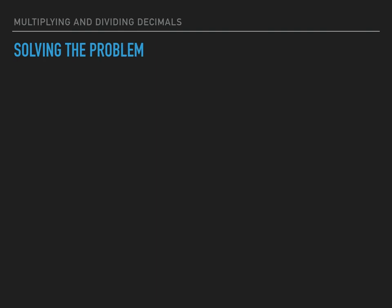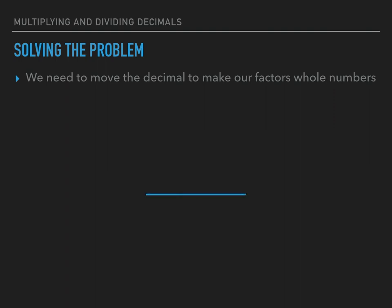Let's talk about solving a problem now. The very first thing we need to do is move the decimal to make our factors whole numbers. We cannot multiply with decimals in our problem. So I have two and fifty-three hundredths and six tenths. We are going to move that decimal to the right and count between our place values to see how many times we have to move it.